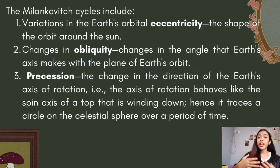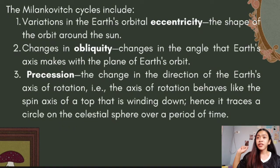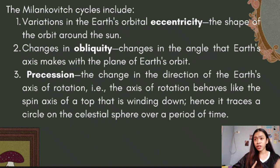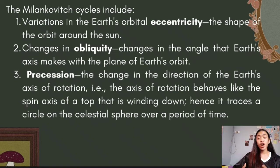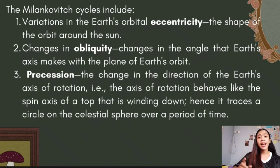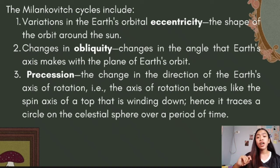The Milankovitch cycles include: 1. The variations in the Earth's orbital eccentricity, which is the shape of the orbit around the Sun. 2. Changes in obliquity — changes in the angle that Earth's axis makes with the plane of Earth's orbit. 3. Precession, which is the change in the direction of the Earth's axis of rotation. The axis of rotation behaves like the spin axis of a top that is winding down, tracing a circle on the celestial sphere over a period of time.